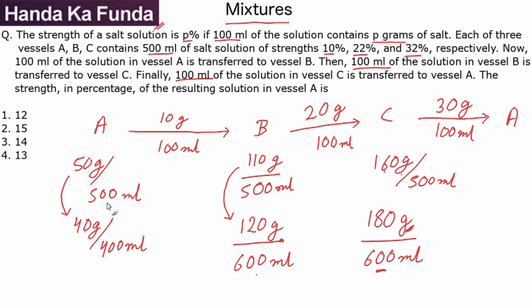So what will happen in A? A now had 40 grams, 30 grams will get added to it. So it will become now 70 grams and what will be the quantity of the solution? It was 400 ml, 100 ml will now get added which is getting transferred from C to A. So 70 grams out of 500 ml. This is the final concentration or the final quantity of the resulting solution in vessel A. And what is this in percentage terms? 70 out of 500 is 14% or option 3 is our answer.